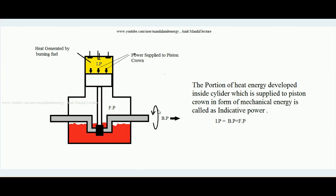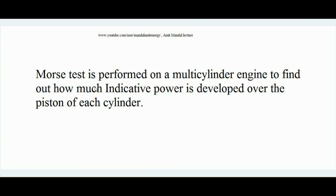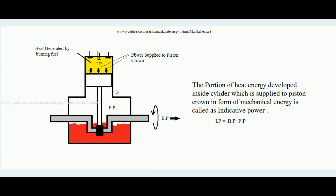We can measure the brake power of the engine by a device called a dynamometer. But how do we measure the indicative power of an engine? We cannot go inside the cylinder and measure exactly how much indicative power is imparted over the piston top. For that purpose, the Morse test is conducted. The Morse test is performed on a multi-cylinder engine to find out how much indicative power is developed over the piston of each cylinder.